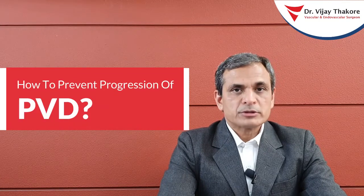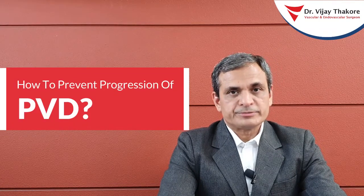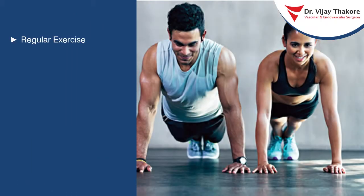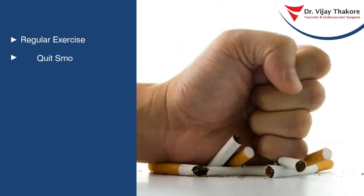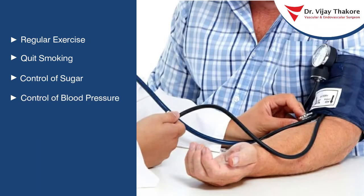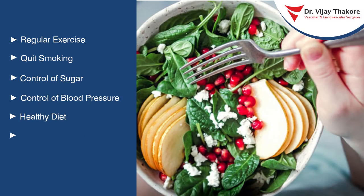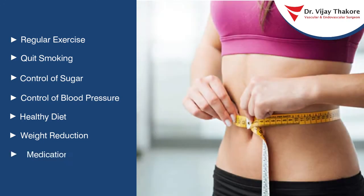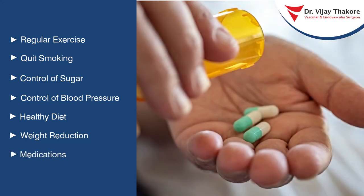How can we prevent progression of PVD? Progression of PVD can certainly be controlled or reduced by regular exercise like walking, control of risk factors like smoking, good control of sugars, blood pressure, and lipid abnormalities, diet, weight reduction, and certain drugs like cilostazol, aspirin, clopidogrel, and rivaroxaban. Save legs, save life.